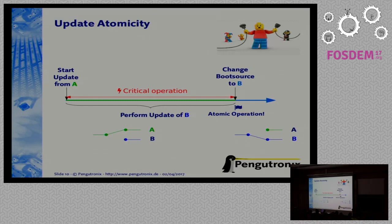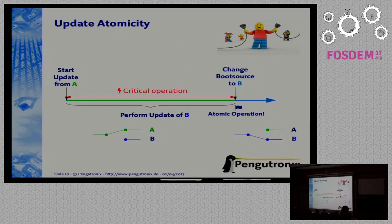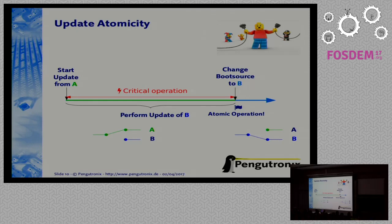Another thing that is really important when updating is atomicity. The result of the update should either be that the update succeeded or that the update failed — you don't want to leave it in an undefined intermediate state. The way to achieve this is to treat the entire update as a critical operation. You have a switch where you say 'boot from system A,' and then at the very very end of the update process you flip the switch to 'boot from system B.' Only then can you be sure the update was performed successfully. And this switch operation should itself be an atomic operation.